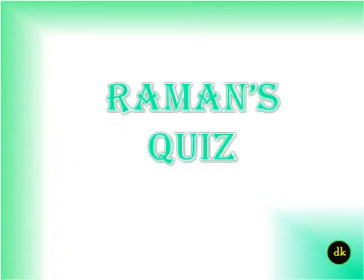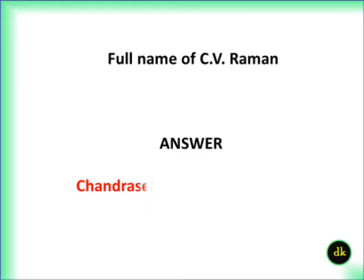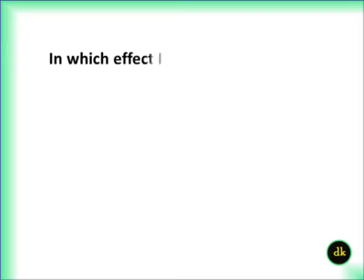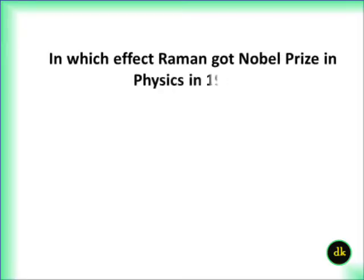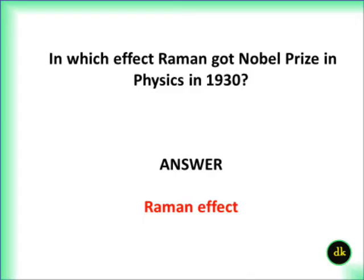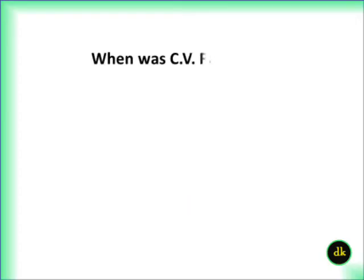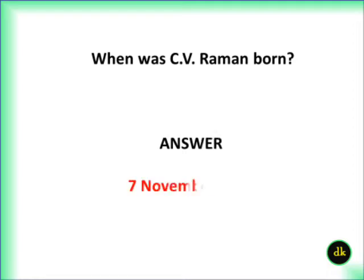Raman's full name: C.V. Raman, Chandrasekhara Venkata Raman. In which effect Raman got Nobel Prize in Physics in 1930? The Raman Effect. When was C.V. Raman born? 7th November 1888.